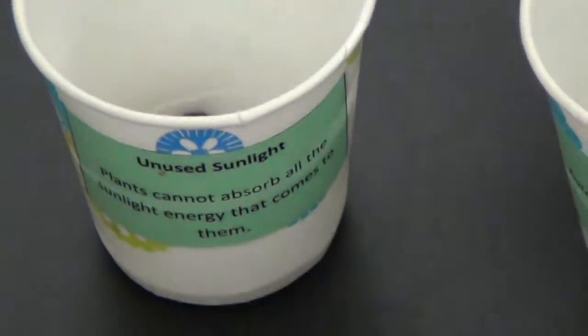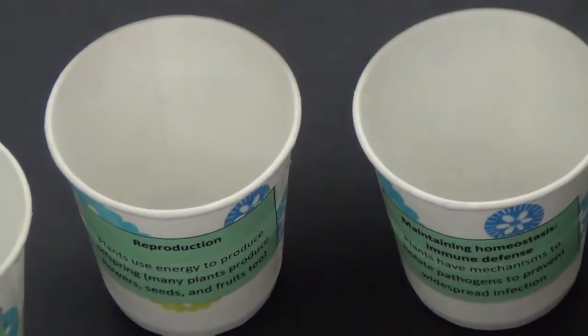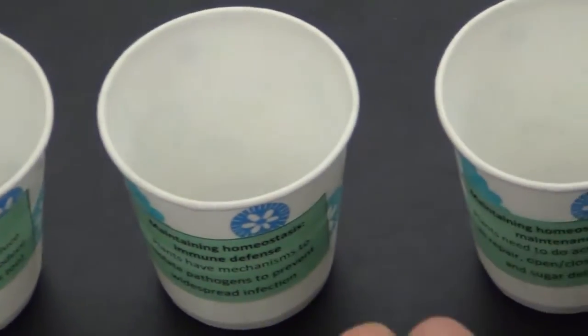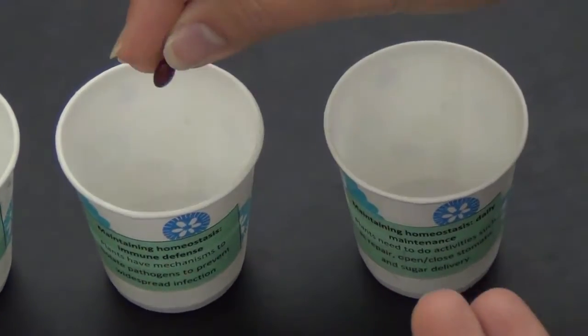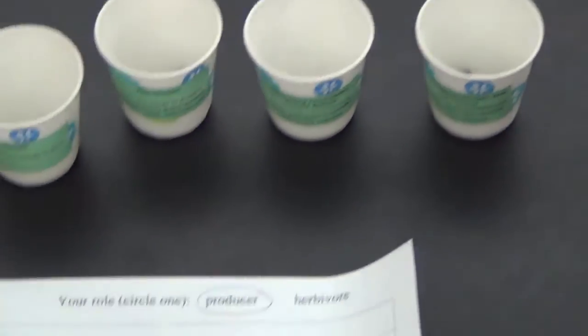I would recommend that maybe you put the cups in the order of the sheet. That'll just make it easier for yourself. And then you can split up the beans accordingly. Maybe one bean for growth, two beans for reproduction, two beans for immune defense, three beans for daily maintenance.